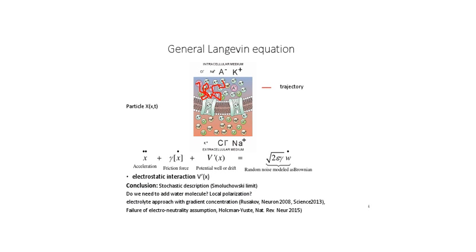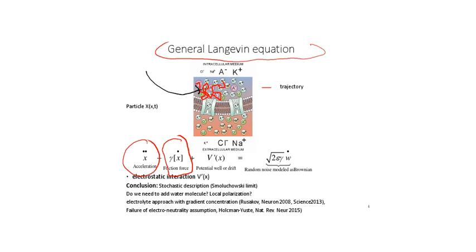The general Langevin equation describes the trajectory of a particle. It says that the acceleration plus the friction force, proportional to friction coefficient gamma times velocity, plus the potential well or drift, equals the random forces. This is a stochastic description. In electrolytes we should also add water molecules and sum the effect of local polarizations of water, but this is very difficult to analyze, and coarse-grained models are needed.